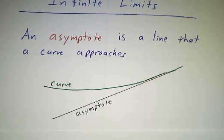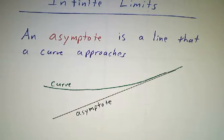Asymptotes can be vertical, they can be horizontal, they can be diagonal — this one's diagonal. In this video, we're going to talk about vertical asymptotes.